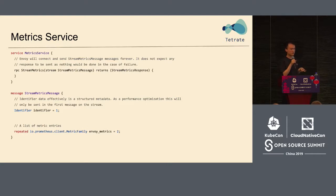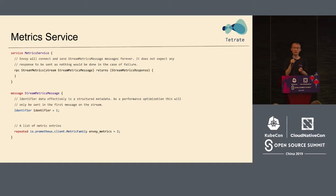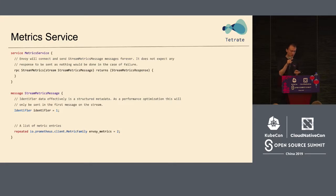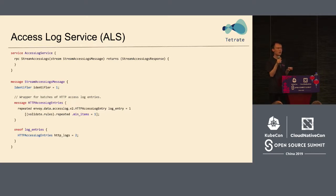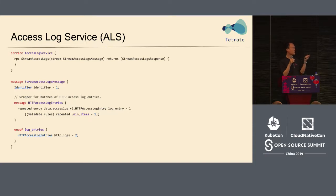For observability, let's first look at the metric service, which is a very easy service. We identify one stream and can see the metrics. The metrics use structured parameters identifying which Envoy and which cluster it belongs to. As for the access log service, it's similar — we can use HTTP access log entries as an example. For every filter we can add unique data and an identifier. This is the streaming tool.